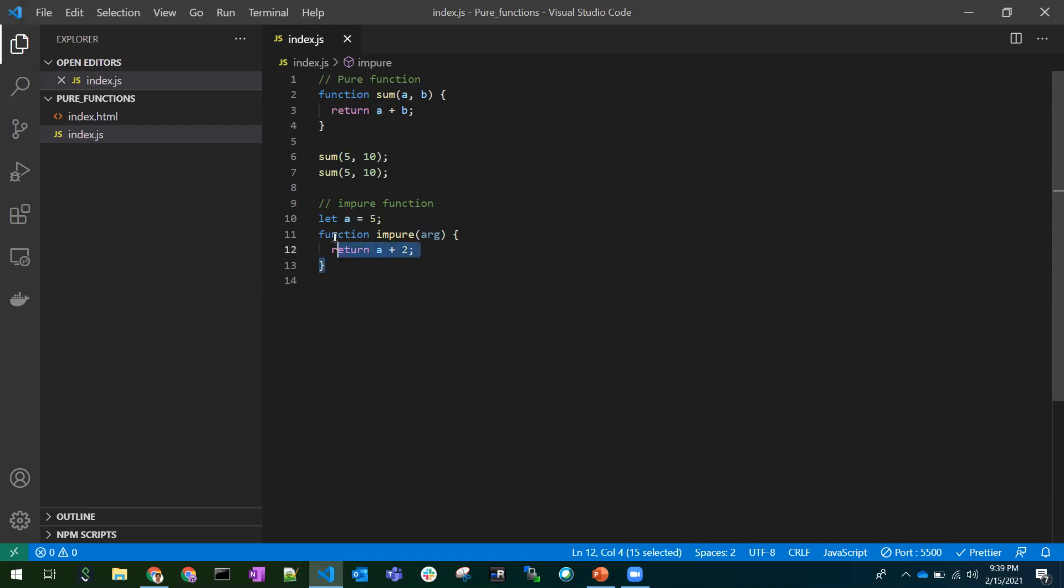In short, I'm defining this impure function like this. The side effect is it is trying to use a variable outside the scope. If you do any API calls or DOM manipulations, those are considered side effects. That means this function is impure.